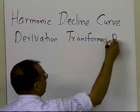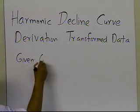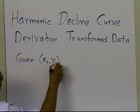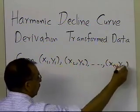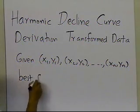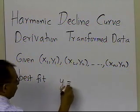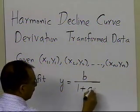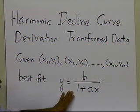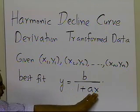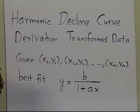What we mean by transformed data will be evident when we go through the derivation itself. Our problem statement is: given n data points (x1, y1), (x2, y2), ..., we want to best fit the harmonic decline curve to the data, which is given by y = b divided by (1 + ax). This is called a harmonic decline curve because as x approaches infinity, y goes to 0.